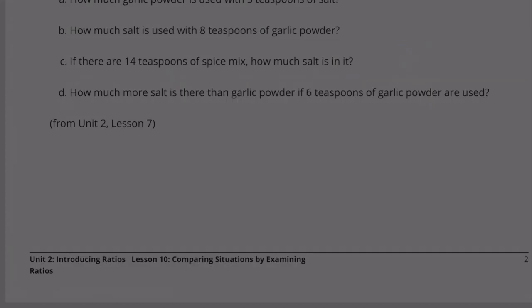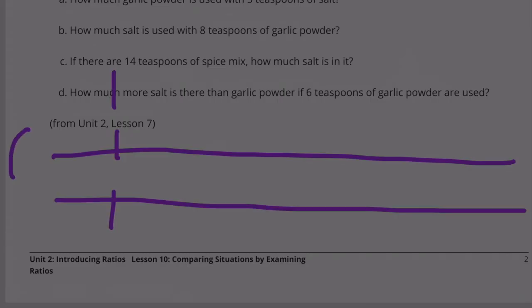D. How much more salt is there than garlic powder if 6 teaspoons of garlic powder are used? 1, so this is garlic powder, this is salt. 2 to 5. We figured that out. 2 to 5, 3 to 7.5, 4 to 10.